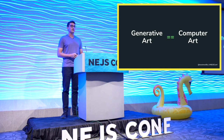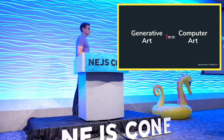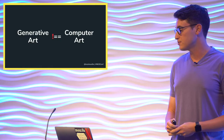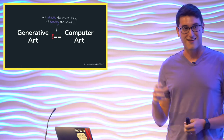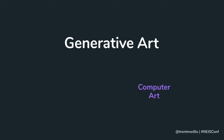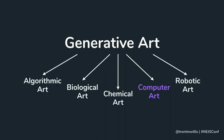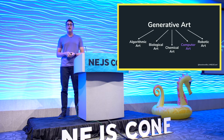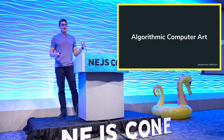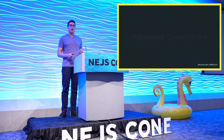Generative art is often created with computers, and a lot of people associate it with computer art because computers are really good at doing stuff without humans having to drive every single action. But that's not the only type of generative art. Generative art is loosely equal to computer art, but not strictly equal. It can also take the form of algorithmic art, biological art, chemical art, and even robotic art. For the purposes of this talk, what we're really focusing on is algorithmic computer art.